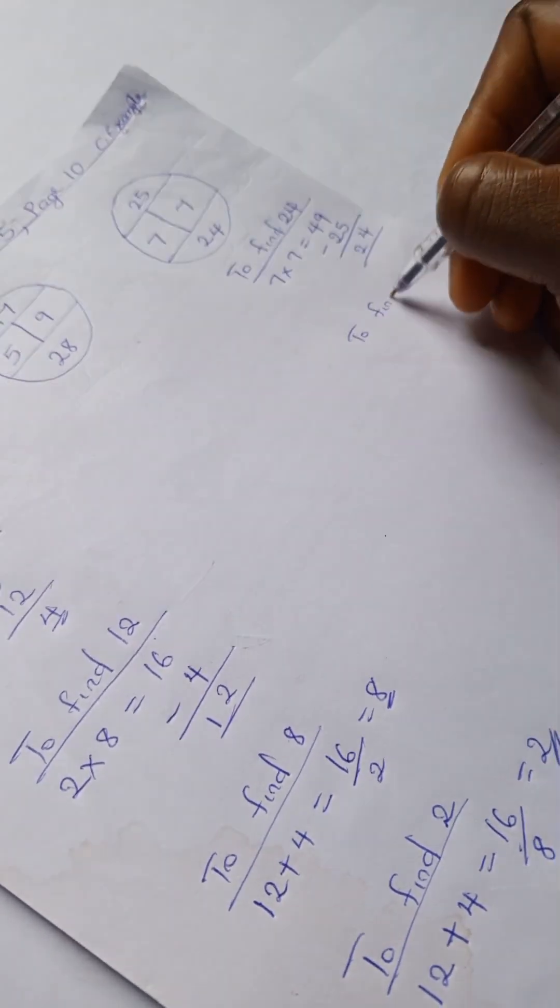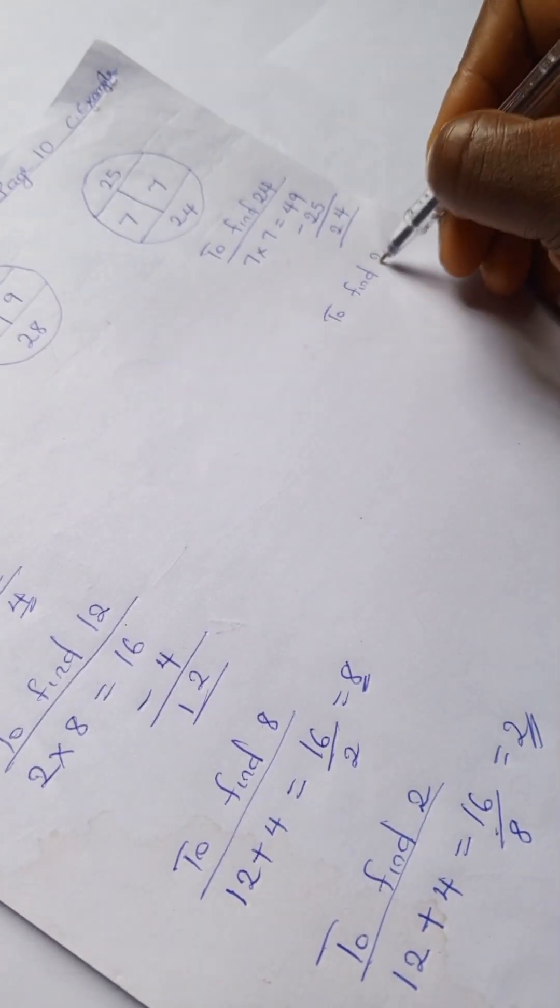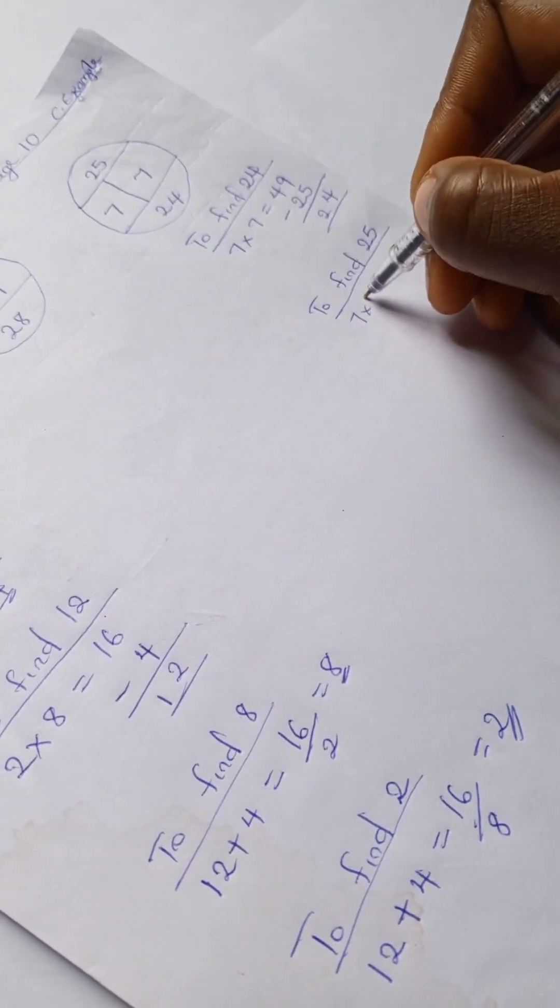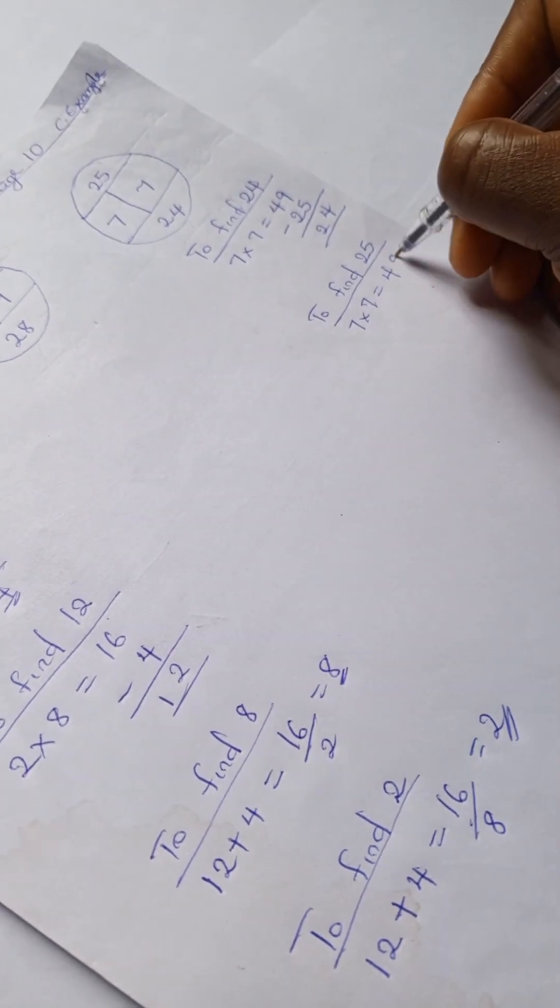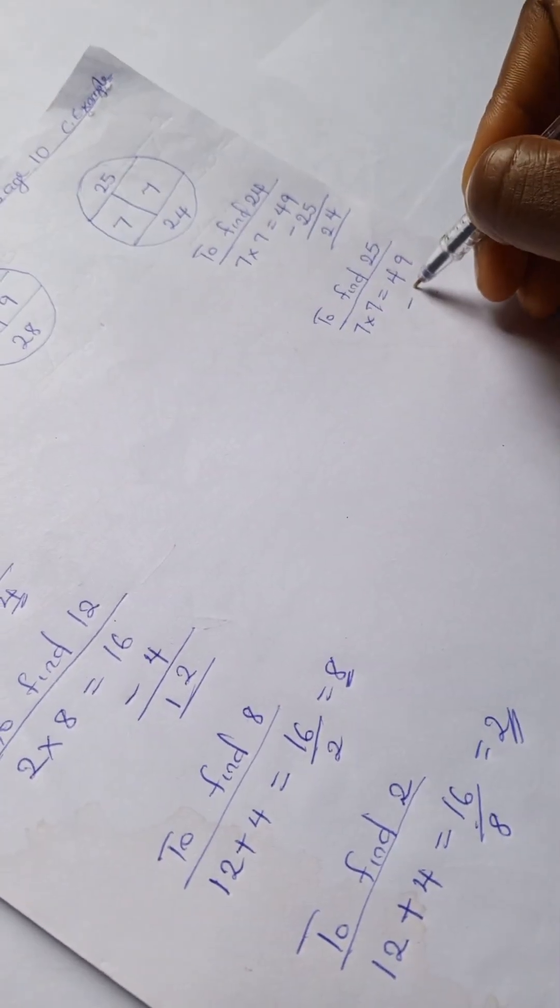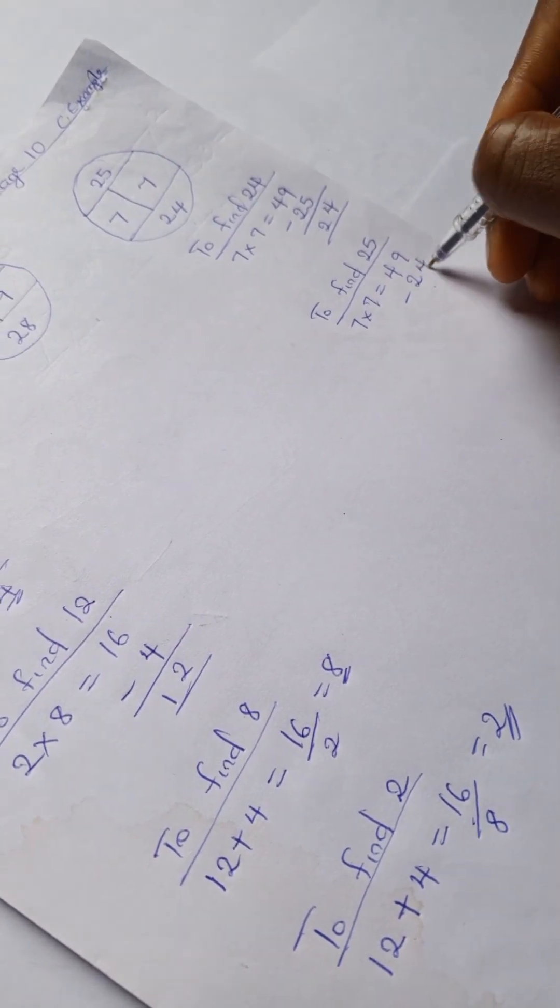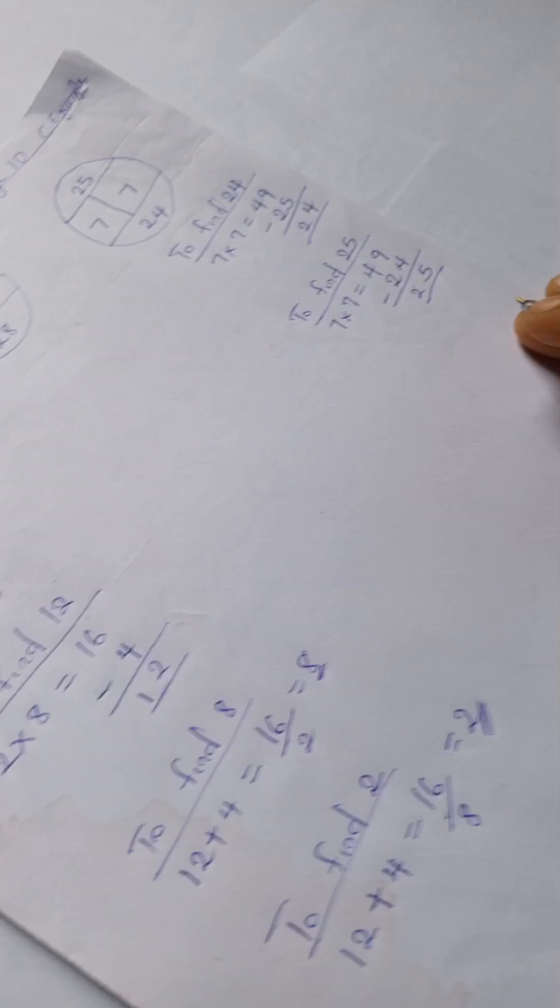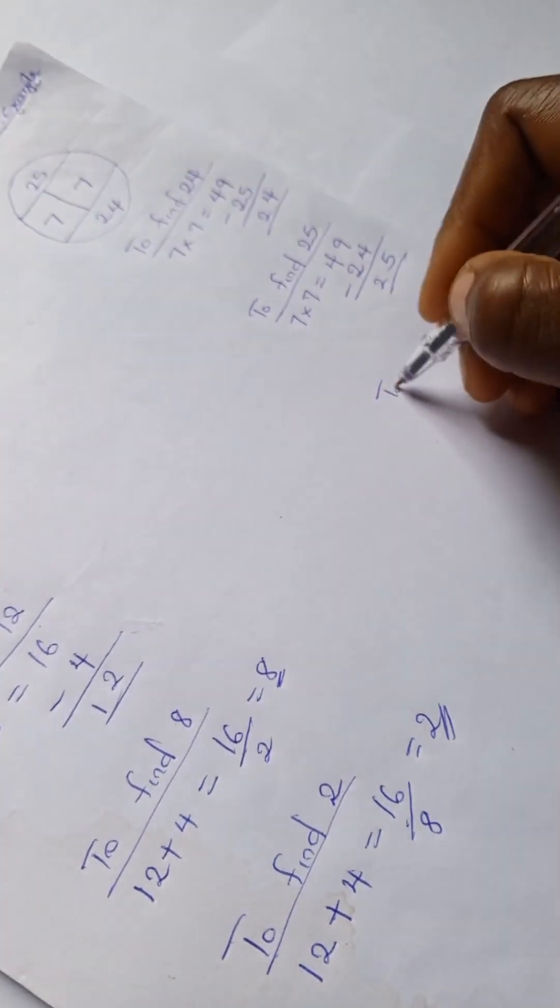So to find 25, we have 7 times 7 is 49, 49 minus 24 is 25.